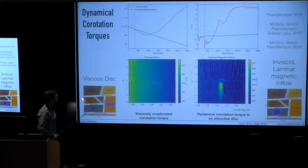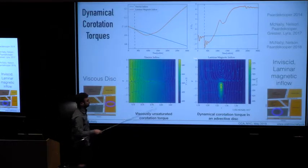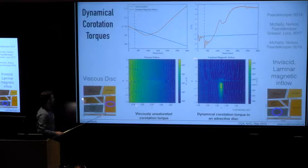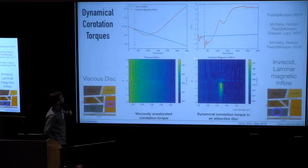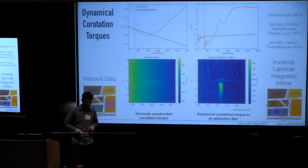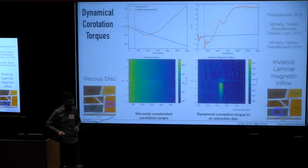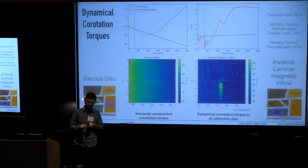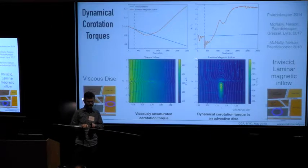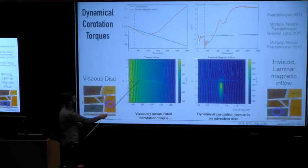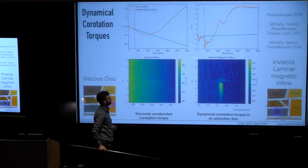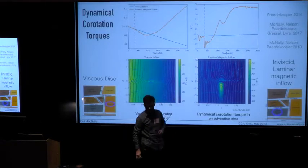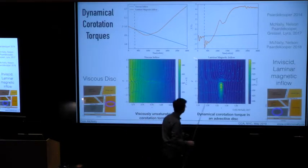So let's start at the bottom with a dynamical co-rotation torque in the low viscosity regime and a standard saturated, viscously unsaturated type 1 migration in the high viscosity regime. I'm going to show you a little numerical experiment here where I do two runs in the same disk and with the same planet, and then I make a modification to each of those disks that's different for those two.